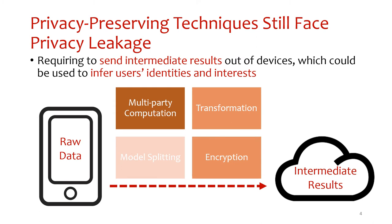Although there have been efforts on privacy-preserving deep learning techniques such as shared modules, multi-party computation, transformation, partial sharing, module splitting, and encryption, the risks of privacy leakage still exist because those approaches require sending intermediate results out of the user's devices. Intermediate results could be used to infer users' identities and interests. As a result, users may still refuse the recommender to use their data, even if encrypted or disturbed.